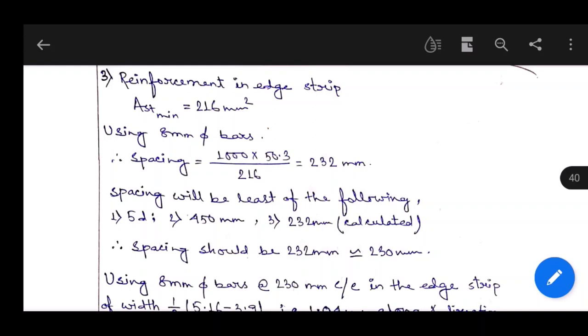In edge strip, we calculated just like distribution bar of one-way slab. AST minimum is enough reinforcement for edge strip. We took area of steel as AST minimum, and spacing consideration is like distribution bar of one-way slab, slightly different than main reinforcement.